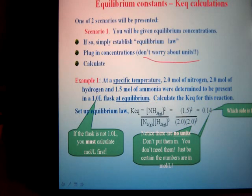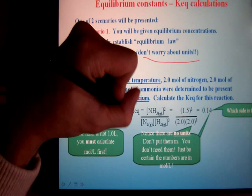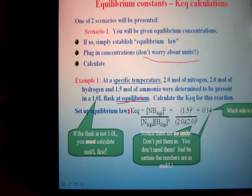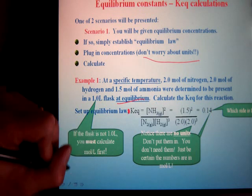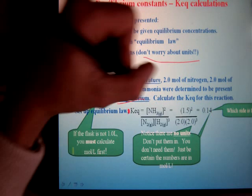In this example, we say at a certain temperature, we added 2 moles of nitrogen, 2 of hydrogen, and 1.5 ammonia. It says it's at equilibrium. So right away, I'm at equilibrium. I set up my equilibrium law. Do that first. And I plug in my values. And I get my final answer, 0.14. And since it's less than one, that means the reactants are favored.